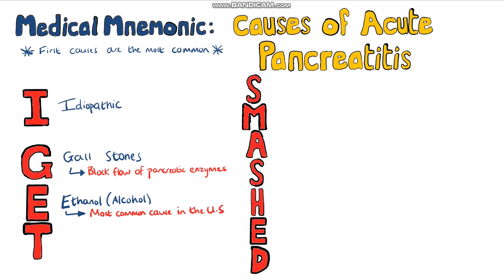T is for trauma. The pancreas is one of the most commonly injured organs in abdominal trauma. Specifically, the liver and spleen are overall the most common; however, the pancreas is also often involved.